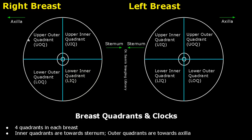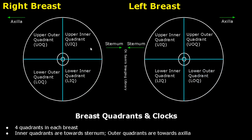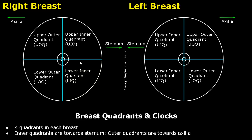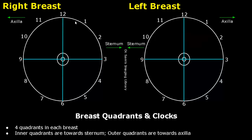Each breast is divided into four quadrants. For the right breast, the upper outer and lower outer quadrants are towards the axilla, and the upper inner and lower inner quadrants are towards the sternum. A clock system is used in breast imaging to make it easier to locate pathologies and pinpoint their locations within the breast.